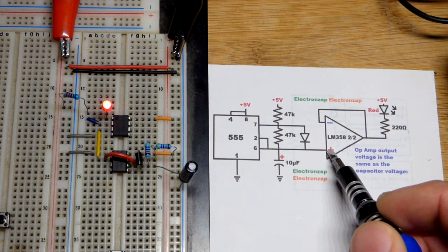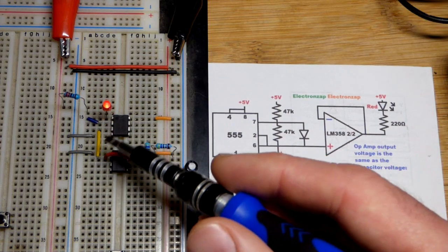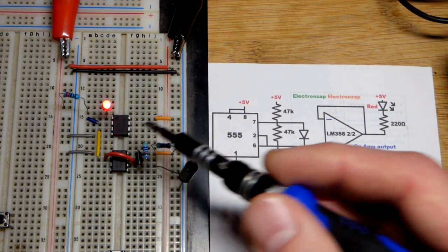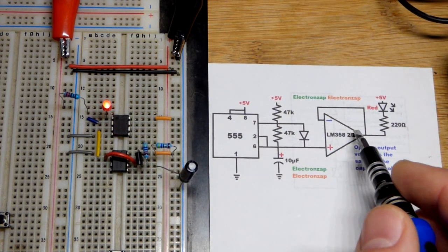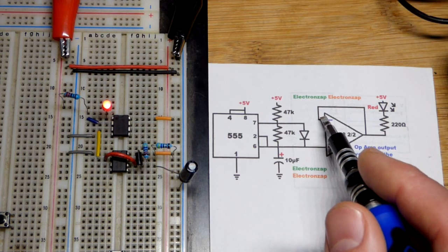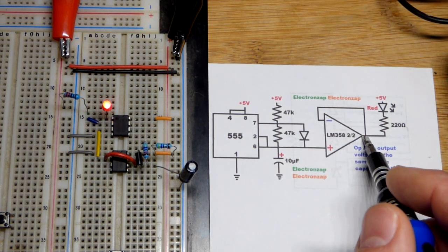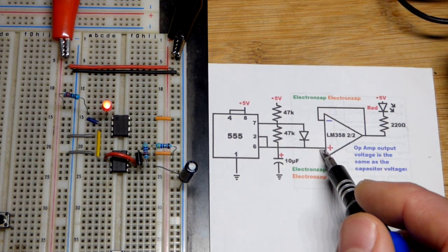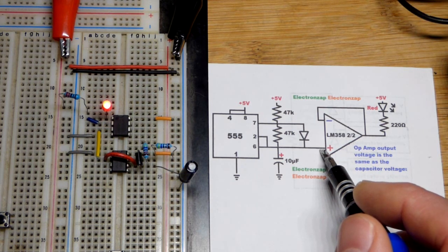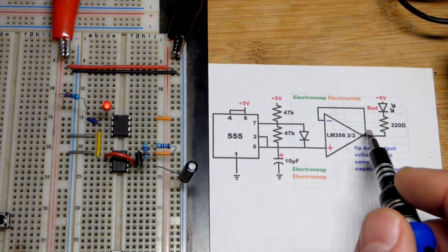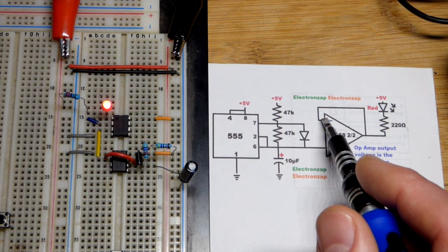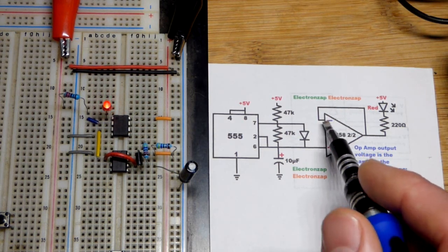The non-inverting input right there of the op amp is looking at that voltage. We have this wired as a voltage follower, so the output wants to be more like the voltage of the non-inverting input than the inverting input. When you give negative feedback basically what it does is it makes the voltages the same.